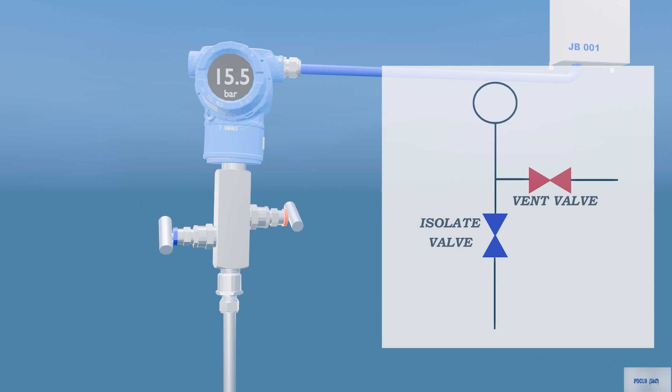A two-valve manifold is mainly used with pressure transmitters, gauges, and switches.